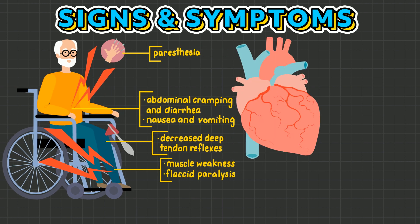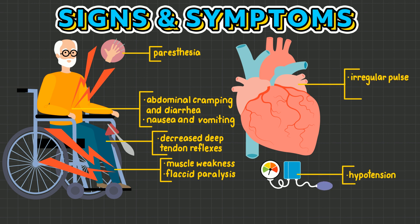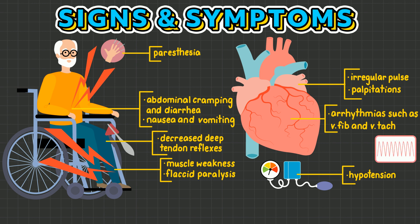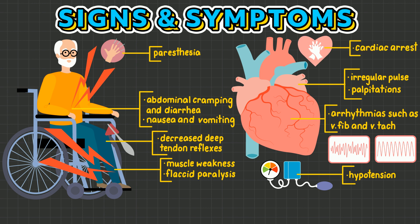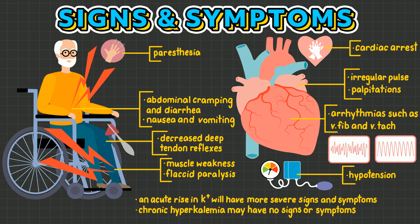Cardiac signs and symptoms include irregular pulse, hypotension, palpitations, and various arrhythmias, some of which can be life-threatening, such as ventricular tachycardia and fibrillation, and cardiac arrest. Signs and symptoms of hyperkalemia are more severe when there is an acute shift of potassium, whereas those with chronic hyperkalemia may have no signs or symptoms at all.